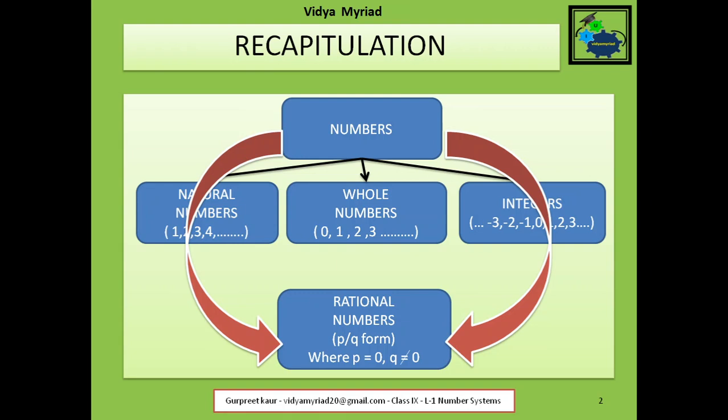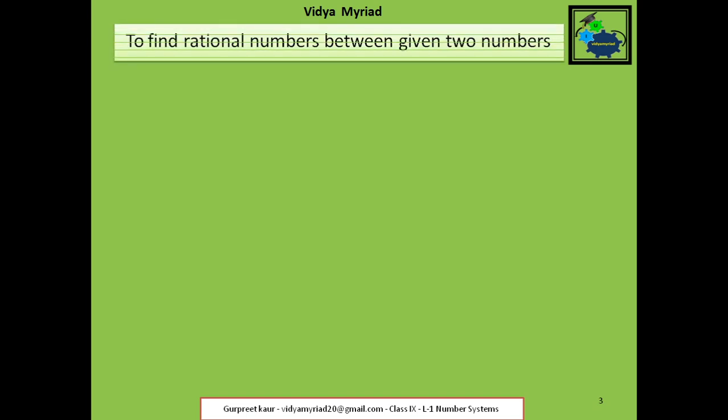In this class I am going to teach you about rational numbers. Now what are rational numbers? These are those numbers which can be presented in the form of P upon Q, or in the form of a fraction. Now here we will work with the help of a formula. The formula given is 1 upon 2 multiplied by (X plus Y). X and Y are the two given numbers in the question, in between which you have to find out the other rational numbers. That means your answer should come in P upon Q or fraction form. That is why we have added 1 upon 2 along with X and Y, so that we get the answer in fraction form.